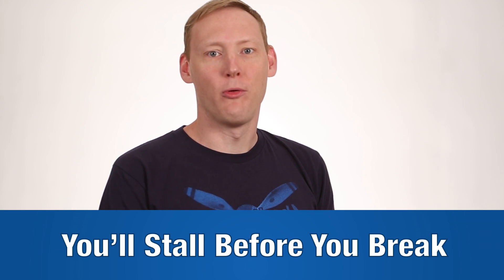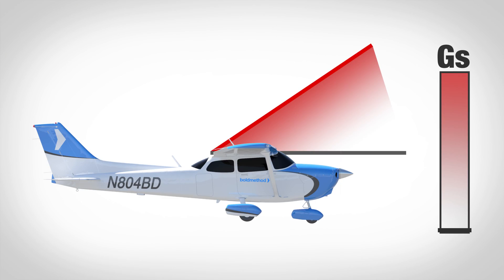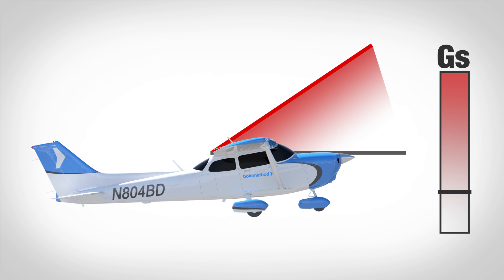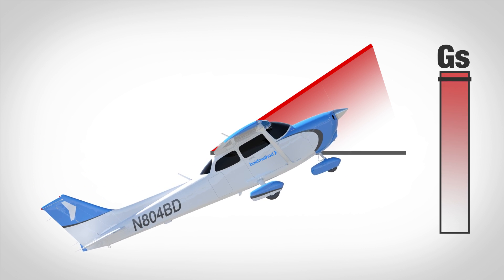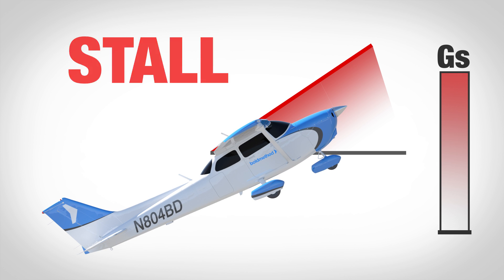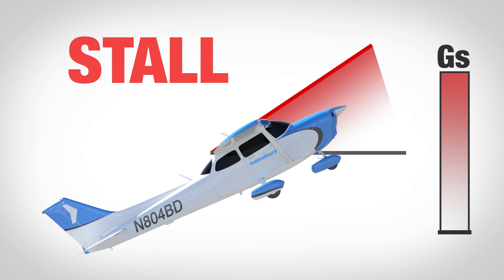First of all, you have to understand what VA does, and that's actually pretty simple. VA means in general you'll stall before you break. So let's say you're flying along in 1g flight and you begin to rip back on that control yoke all the way to the stop. As you pull back, your angle of attack increases, but if you started out at VA, right when you hit 3.8 G's — your limit load factor — your aircraft will reach its critical angle of attack. You'll stall and those G's will go back to normal 1g flight. Your airplane won't break.